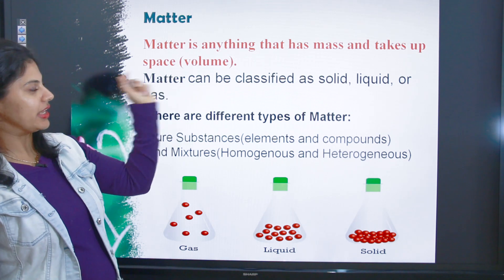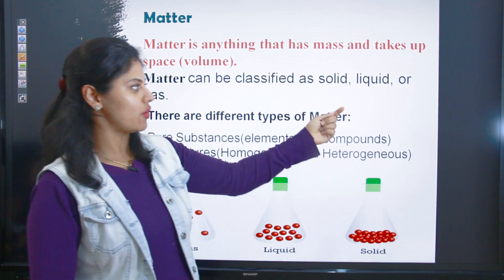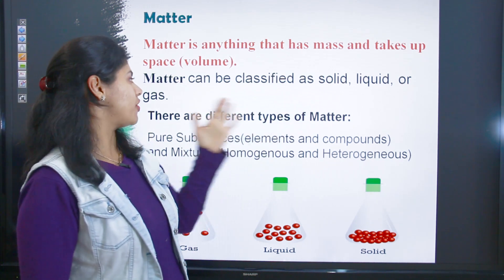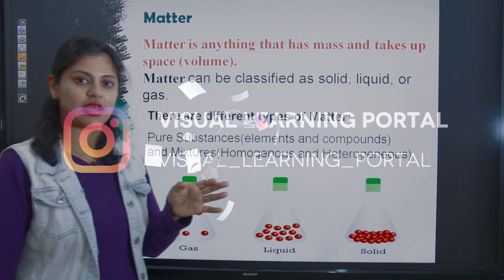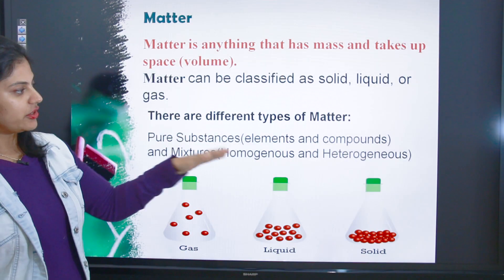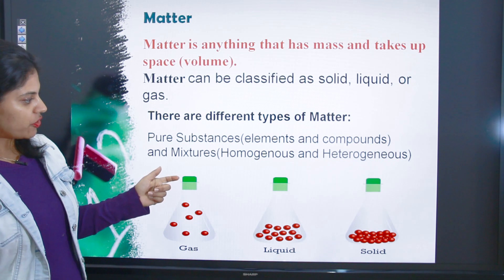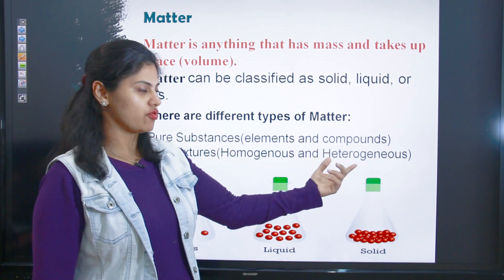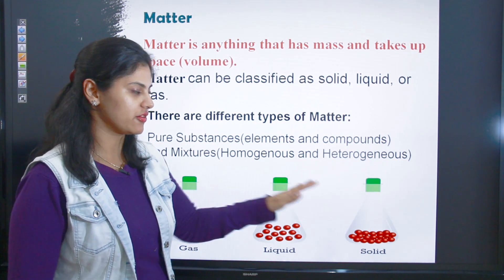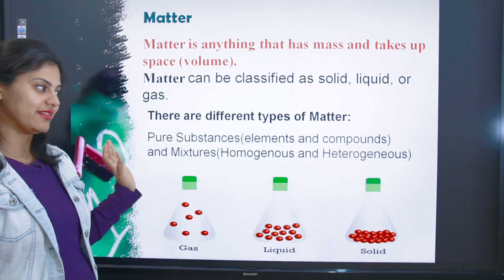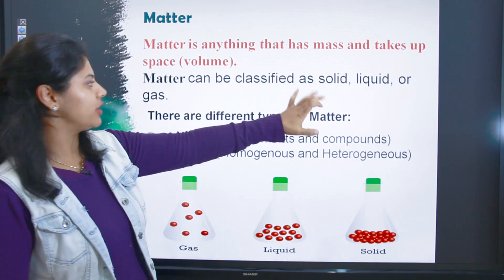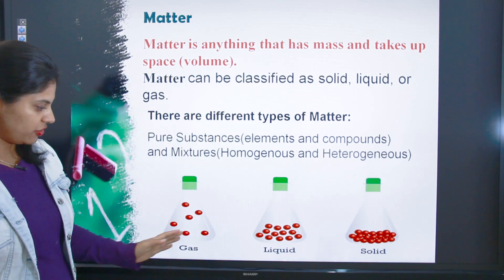Matter can be classified as solid, liquid, or gas. Solid ki form mein, liquid ki form mein, gas ki form mein — koi bhi cheez agar aap dekh sakte ho, that is a matter. There are different types of matter: pure substance, which is categorized into elements and compounds, and a mixture — homogeneous and heterogeneous. We will be discussing solids, liquids, and gases as well.